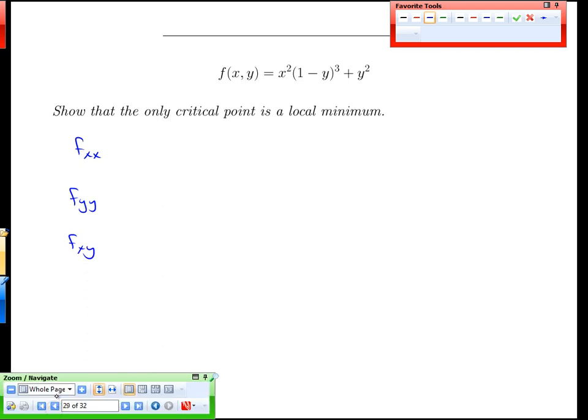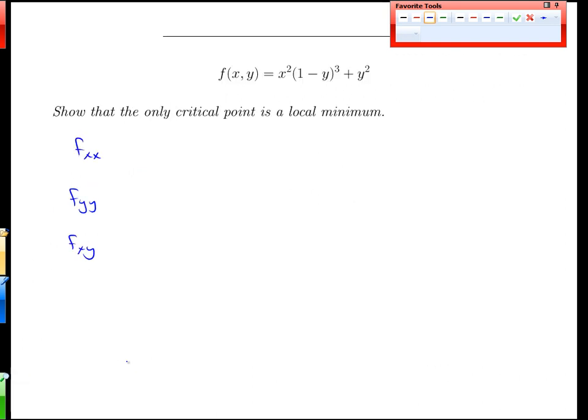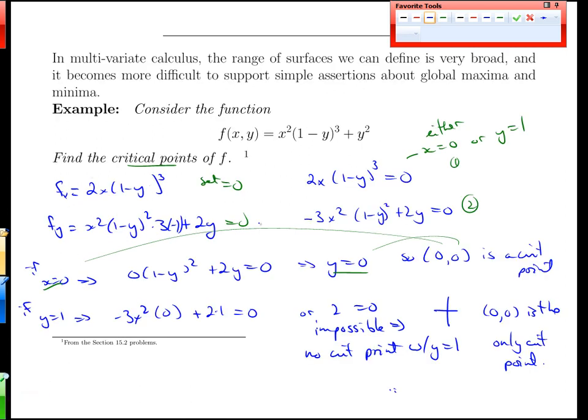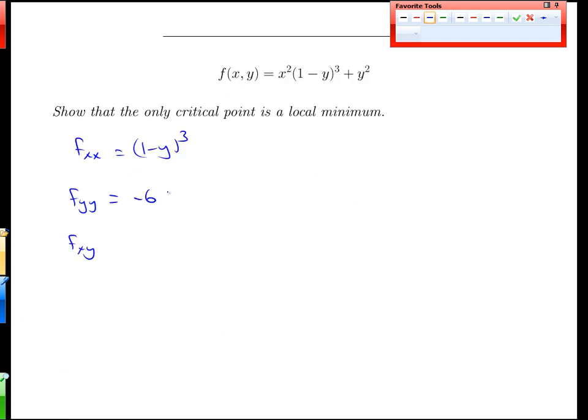And we're just going to flip back here for a second. The x derivative was this. If we take another x derivative, we're going to get (1-y)³ only. The y second derivative, we'd have to differentiate this. Here it is a little more simply written out. With respect to y, we'll get -3x² and two of those and a 2. So -6x²(1-y) to the power 1 minus 2.